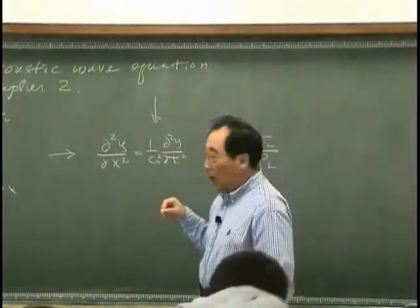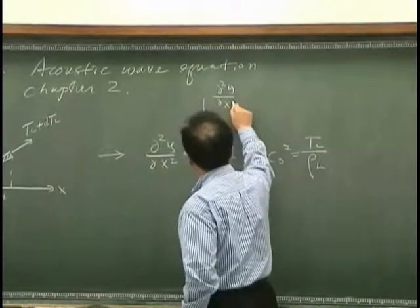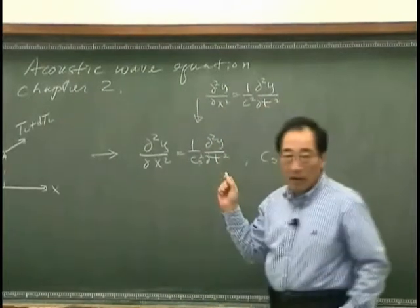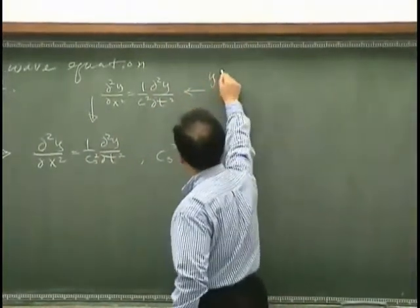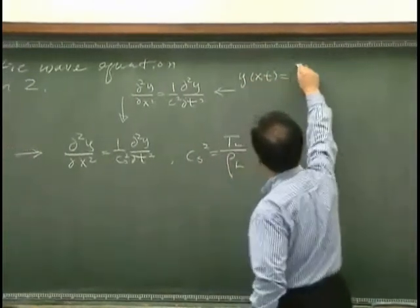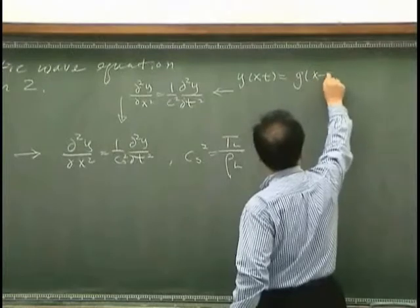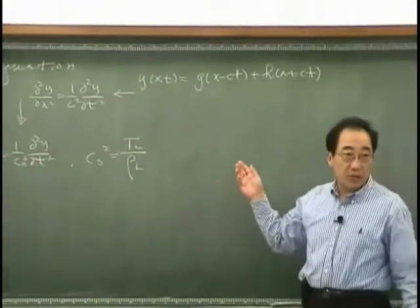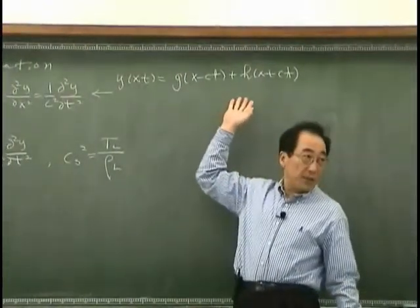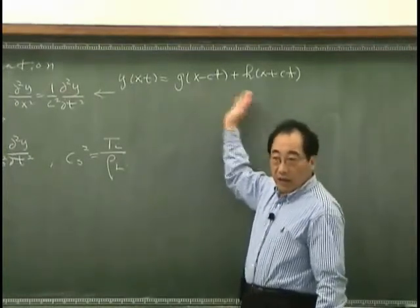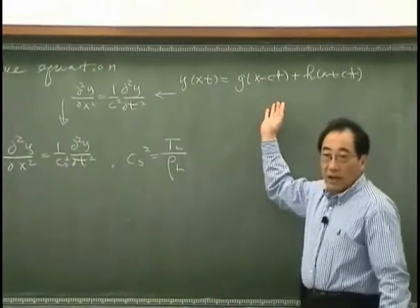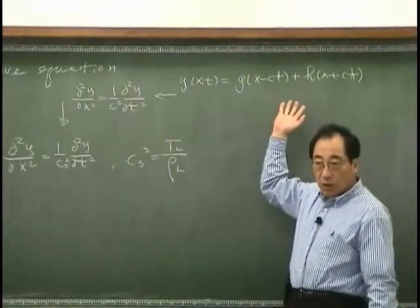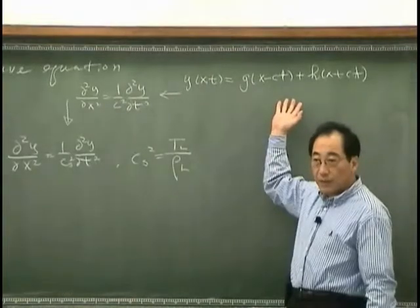We found that any one-dimensional wave can be governed by... Our logical base was that any one-dimensional wave can be expressed mathematically like this - a right-going wave and a left-going wave. And then we found that this wave equation essentially satisfies all possible one-dimensional waves.